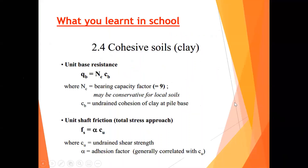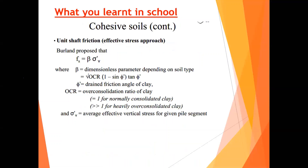What you learn in school covers cohesive soils — meaning clay — and cohesionless soil, which is sand. For different soil types there are different formulas. For clay, you have two methods: you can either use the total stress method, which is the undrained shear strength method — alpha times cu — or you can use the effective stress method, which is beta times effective stress.